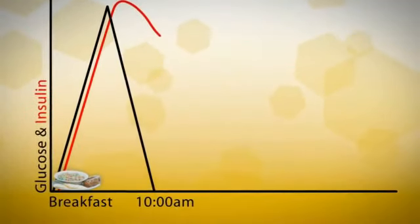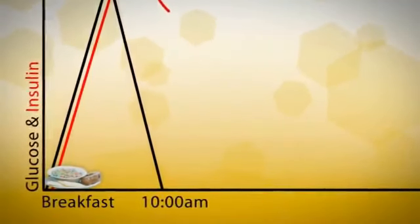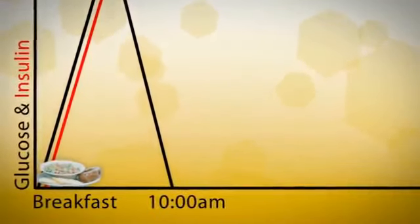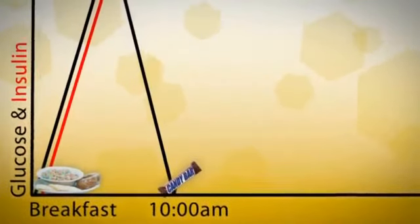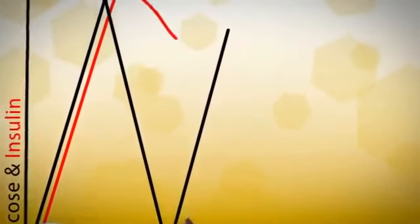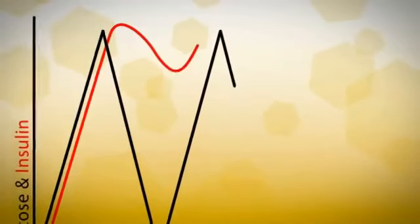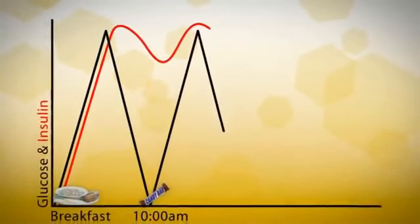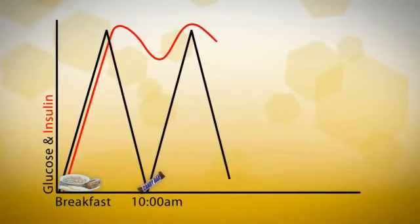Our body needs to eat continually, but the free fatty acids can't leave the fat cells. On come the cravings, the irritability, and so we eat. Our glucose levels spike right back up, our body releases even more insulin, the doors open, the cells are once again fed, and excess glucose is put into our fat cells.